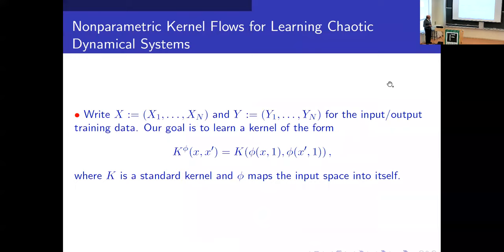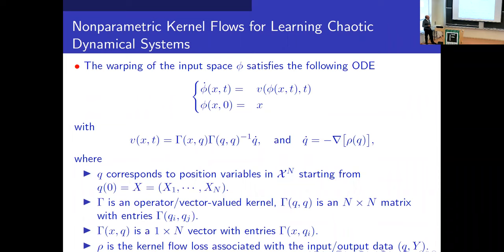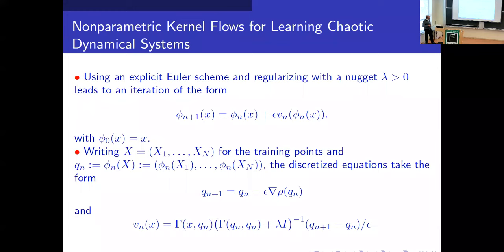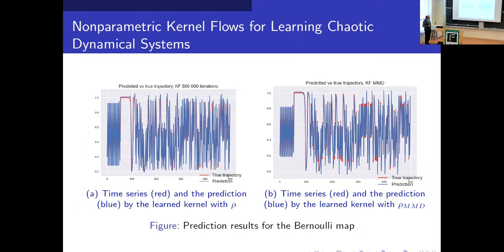In non-parametric kernel flows, we are not learning the parameters of the kernel per se but deforming the data. We assume a kernel K_φ(x, x') which gives K(φ(x), φ(x')), and the goal is to warp the kernel — changing φ — to learn the dynamics. The warping is done through a dynamical system given by an ODE that we discretize to find the warping. At each iteration we find φ and then modify the kernel accordingly. For example, for the Bernoulli map we tried two things: the relative error from the original formulation, and the MMD-based version.